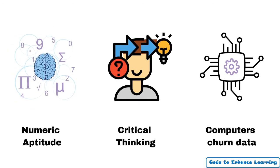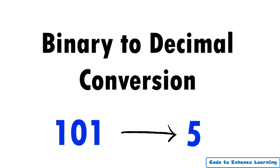Learning this would build your numeric aptitude, critical thinking and help you understand how computers churn data. The conversion of binary numbers to decimal numbers is called binary to decimal conversion.